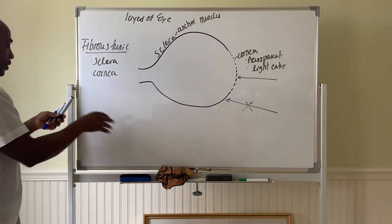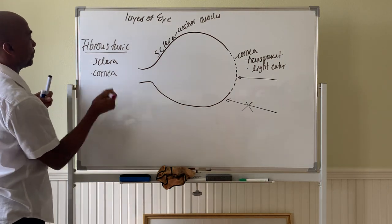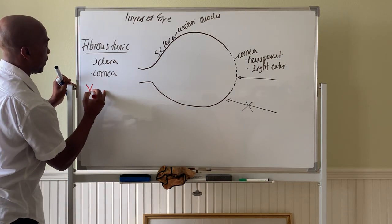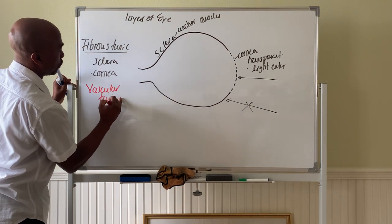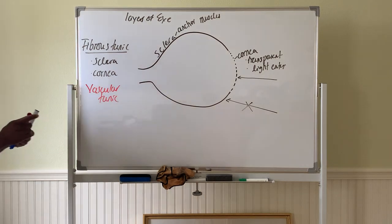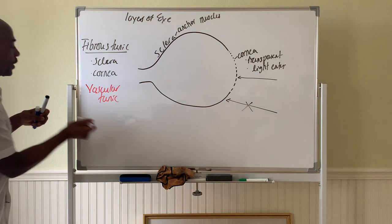Go one layer deeper, what we call your vascular tunic. So here, the vascular tunic. This part, vascular means blood vessel. So here on this tunic,